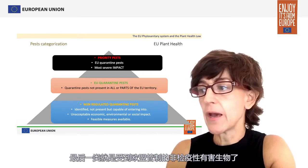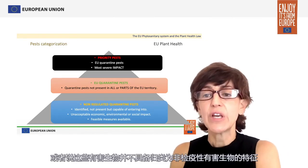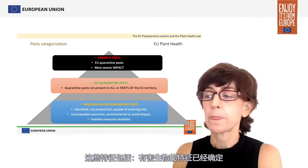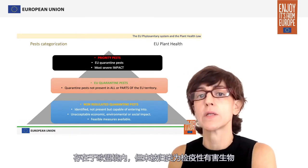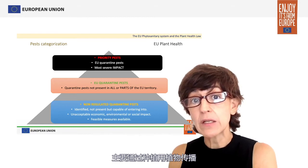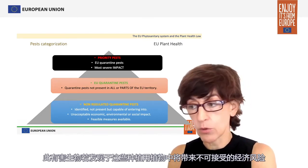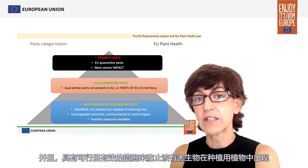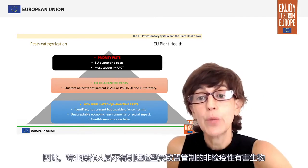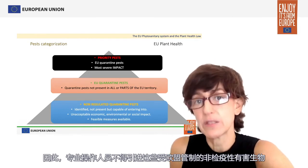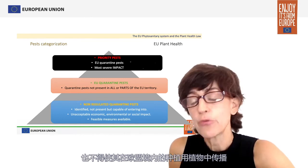The last group would be the Union-regulated non-quarantine pests. These are pests that qualify as such if they fulfill a set of characteristics: the identity of the pest is established; it is present in the Union territory but not categorized as a quarantine pest; it is transmitted mainly through plants for planting; the presence of that pest in those plants for planting would represent an unacceptable economic risk; and there are feasible and effective measures available to prevent the presence of this pest in the plants for planting. Professional operators shall not introduce these Union-regulated non-quarantine pests or move them within the Union territory on the plants for planting through which the pest is transmitted.